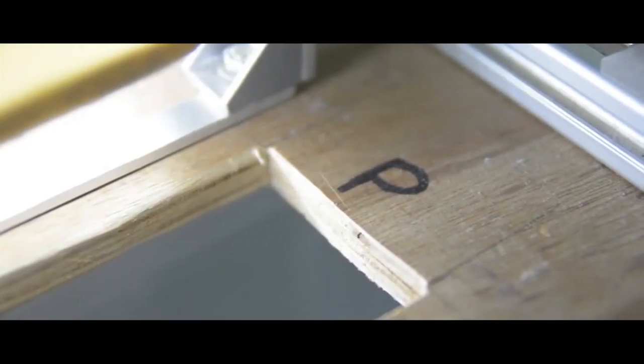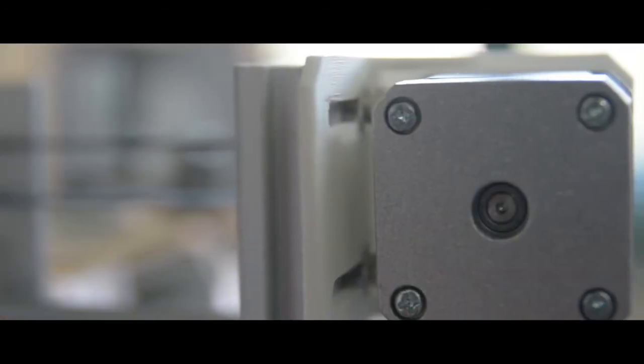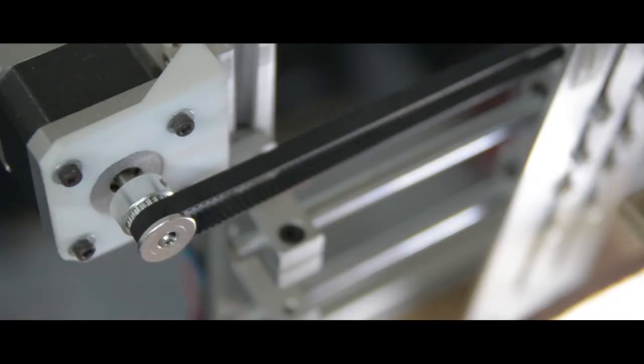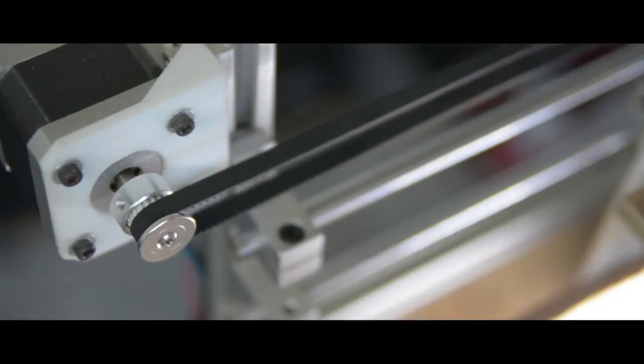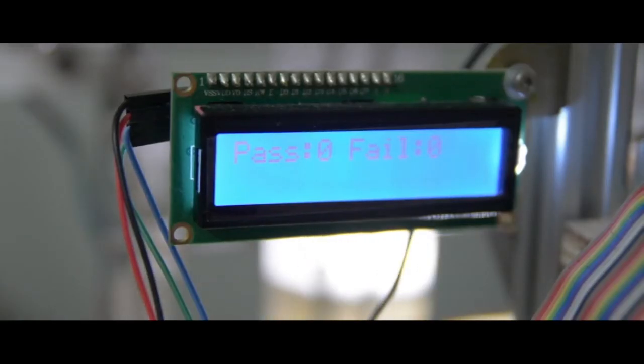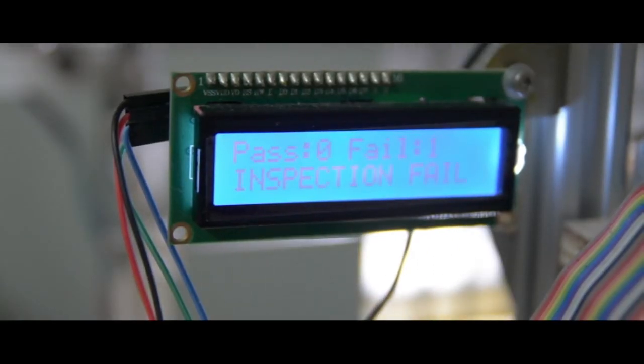The algorithms determine the presence of defects and sort the blister packs into a pass or fail category accordingly. A stepper motor is used to control the sorting arm, and the blister pack then drops into the container through the hole in the base.